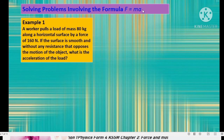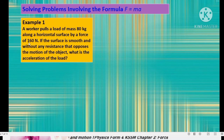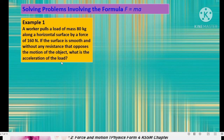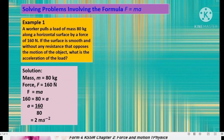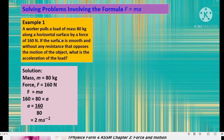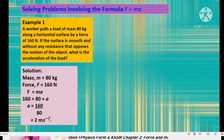Example 1: A worker pulls a load of mass 80 kg along a smooth horizontal surface by a force of 160 newtons. What is the acceleration of the load? From the given information, M equals 80 kg, F equals 160 newtons. Since the surface is smooth with no friction, there is only one force acting. Applying F equals MA: 160 equals 80 times A, giving A equals 2 m/s².